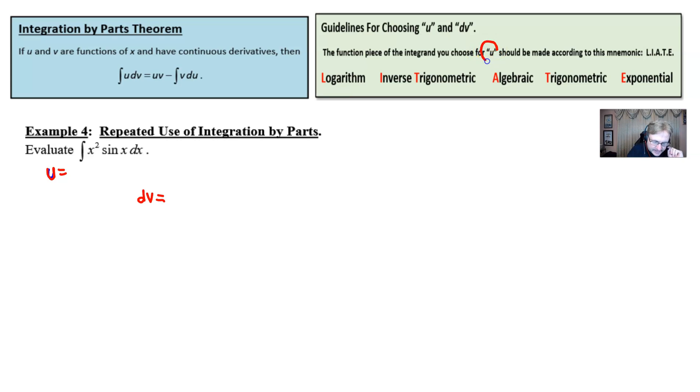Go through the progression. U should be something that's logarithmic. Well, of course, we don't see anything that's logarithmic here, so we go on to the next part. Inverse trigonometric, we don't see inverse trigonometric, so we move on to the next one. Algebraic, and lo and behold, our x squared is considered algebraic, so we're going to go with that. That's going to be our u, and that's going to force our sine of x with respect to x to be the dv.